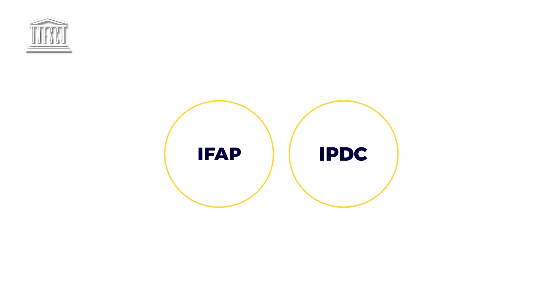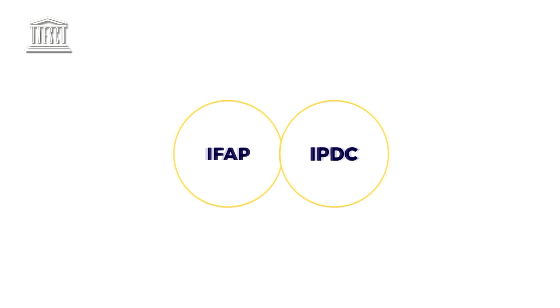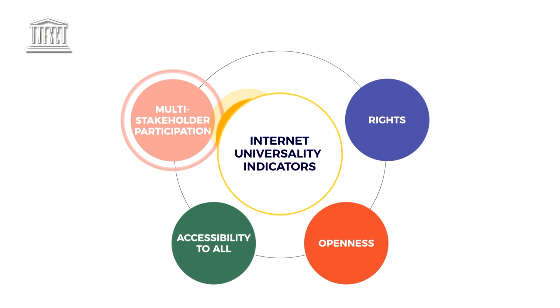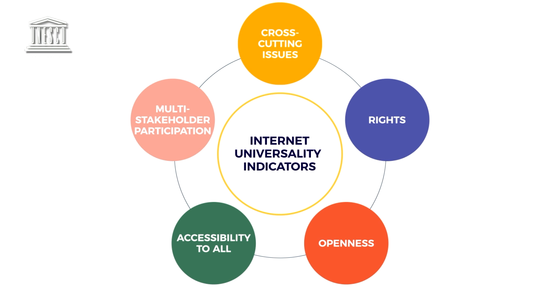IFAP contributes together with the IPDC, another intergovernmental program of UNESCO, in gathering data on information societies and the usage of the internet. The Internet Universality Indicators is a tool for governments and other stakeholders to assess their internet environments in order to address digital gaps and enable accurate policy formulation. IFAP also has the Knowledge Society's Policy Handbook, which guides governments and countries so that they can come up with policies on internet, telecommunication, and how to disseminate information and how societies can use this information to move forward.